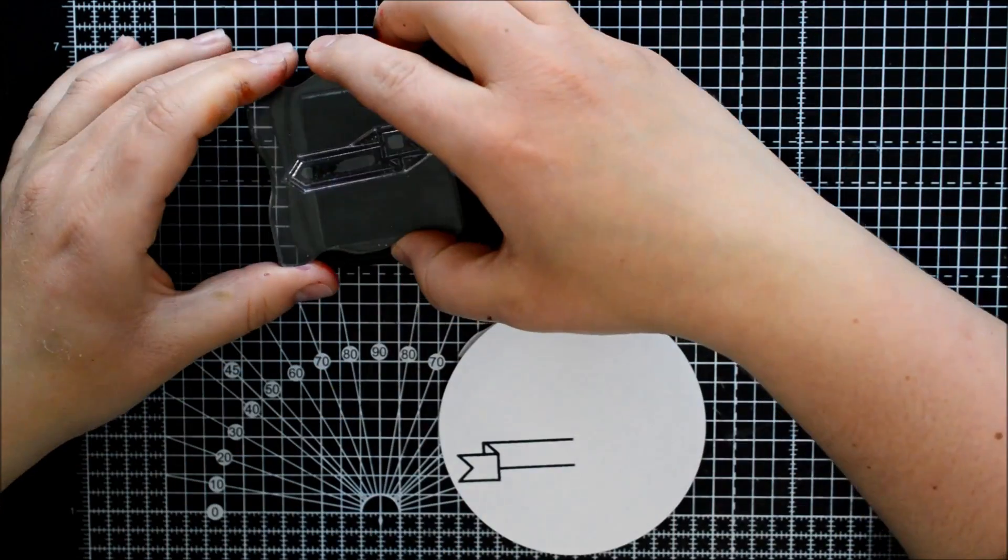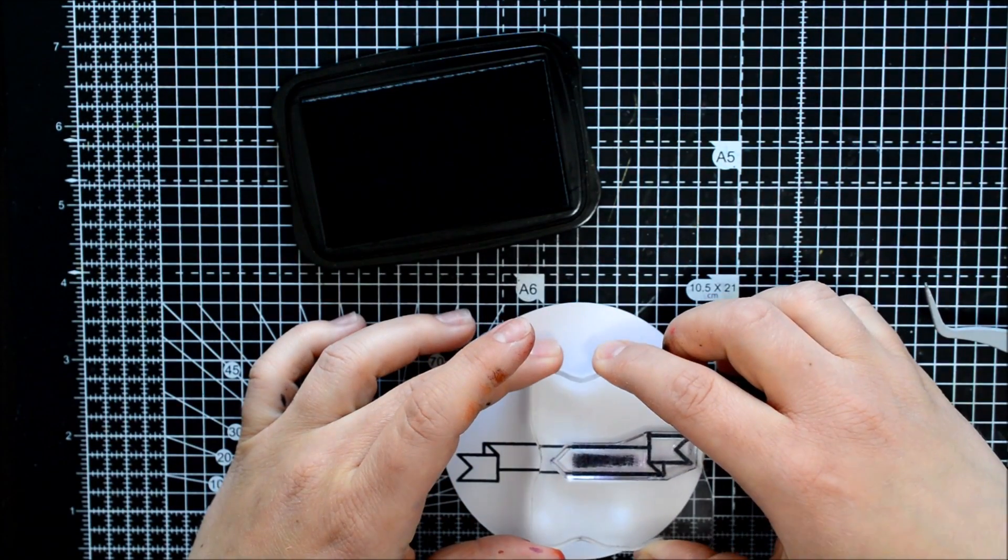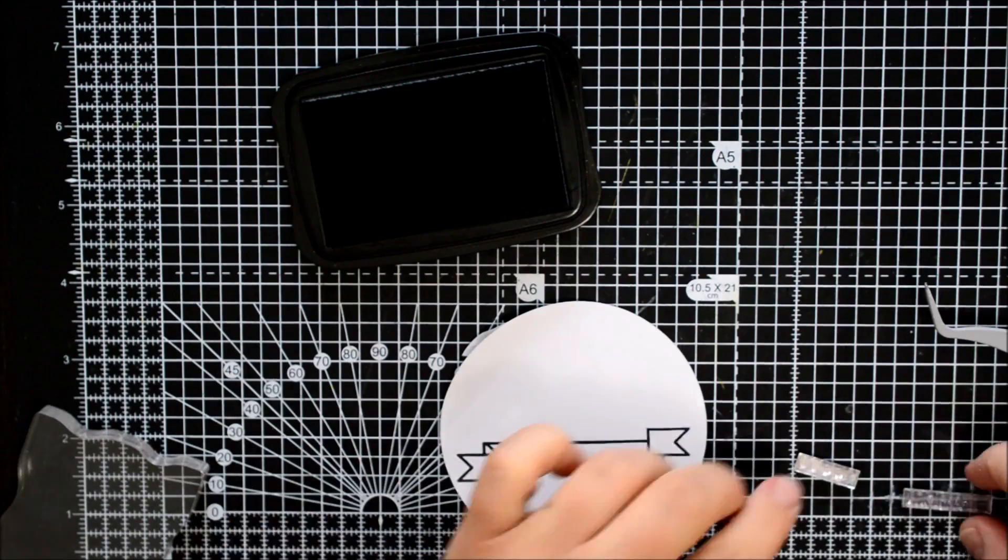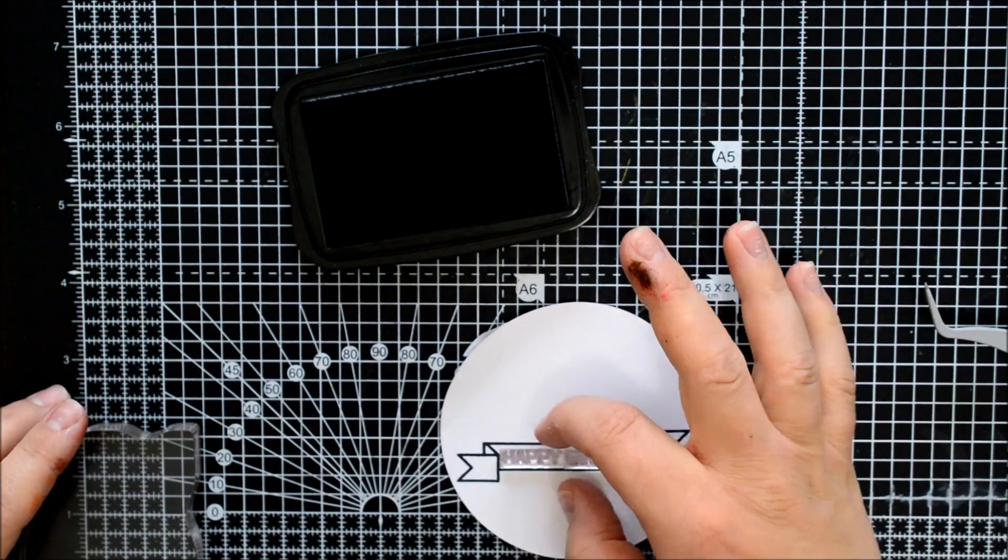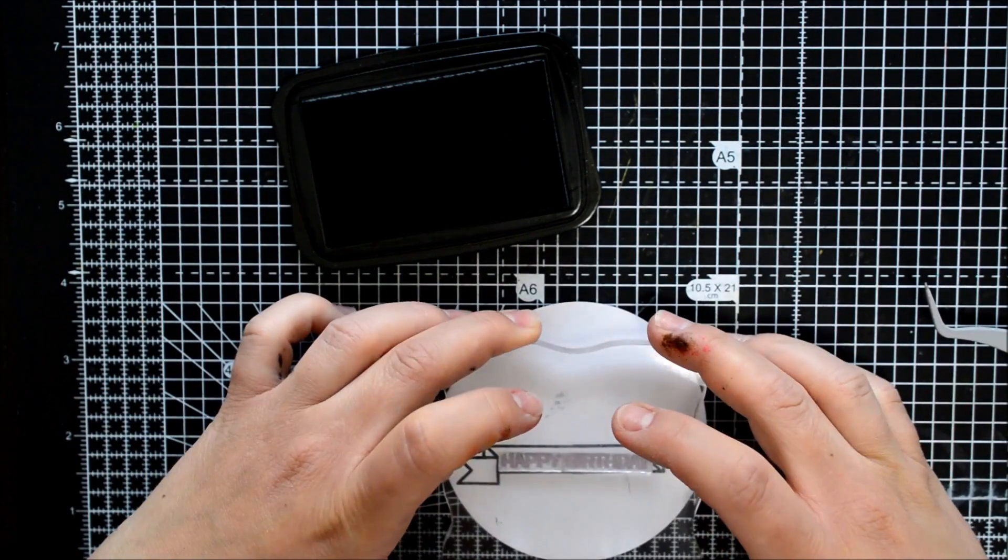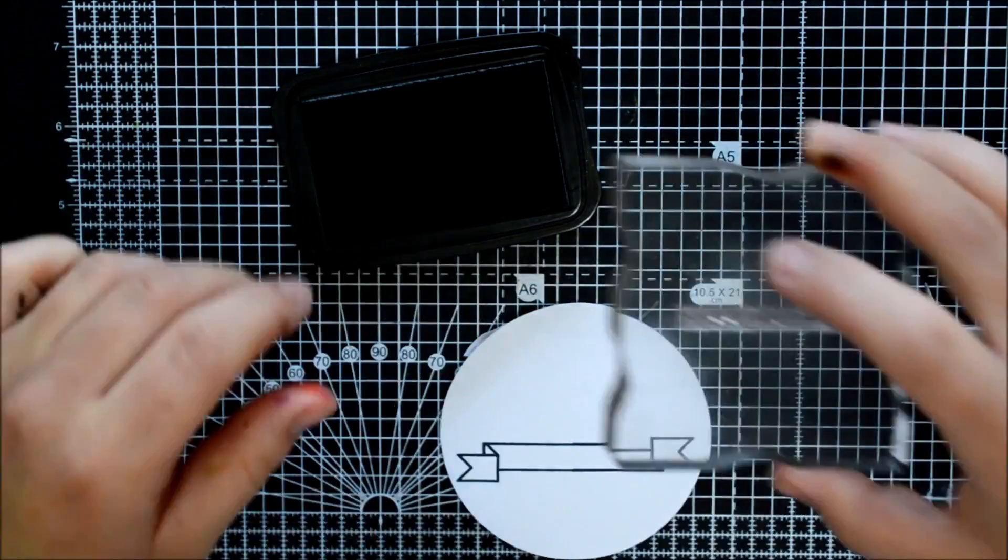I put a ton of glue to make sure it sticks to the card properly. That one is not moving anytime soon. I add it onto my card front. I then cut all the corners of my card. And that is it for the card front.